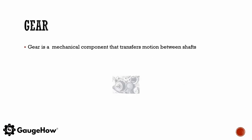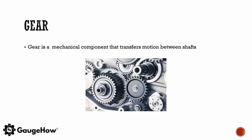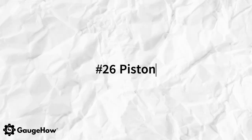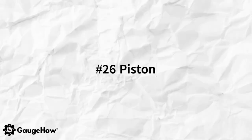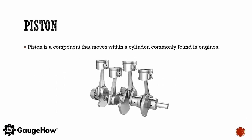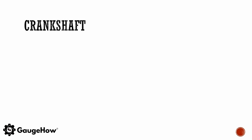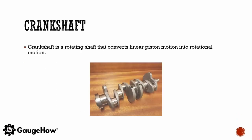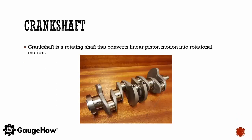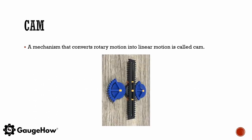A gear is a mechanical component that transfers motion between shafts. A piston is a component that moves within a cylinder, commonly found in engines. A crankshaft is a rotating shaft that converts linear piston motion into rotational motion. A mechanism that converts rotatory motion into linear motion is called a cam.